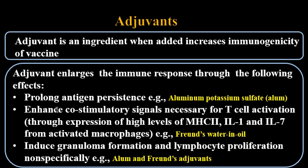An adjuvant enhances co-stimulatory signals necessary for T-cell activation through expression of high levels of major histocompatibility class 2, interleukin-1, and interleukin-7 from activated macrophages. An example for such an adjuvant is Freund's water-in-oil emulsion.